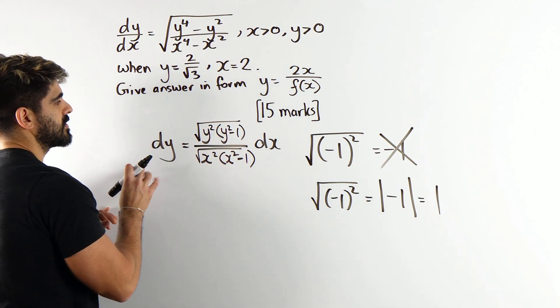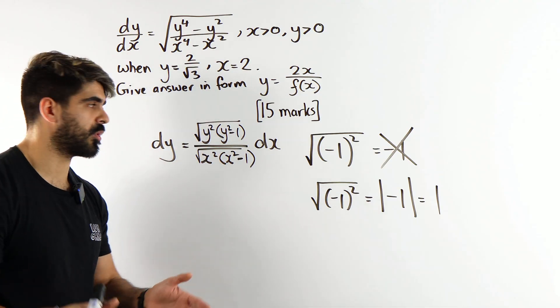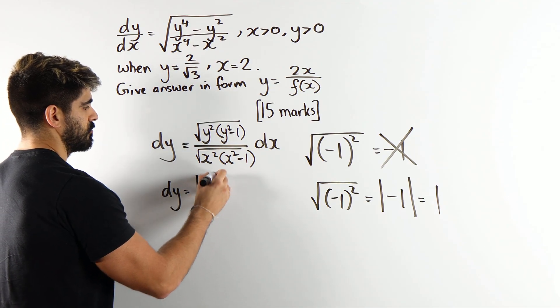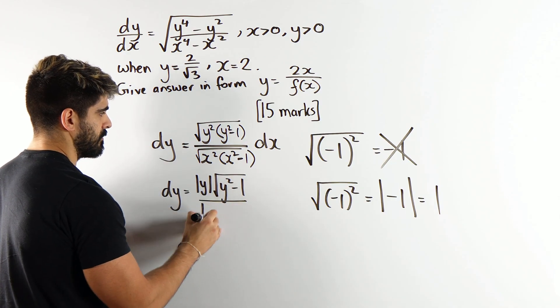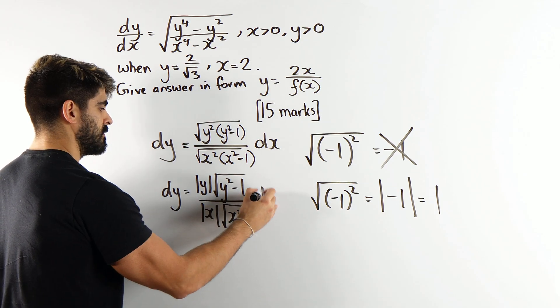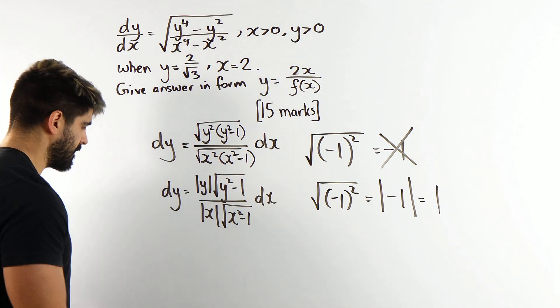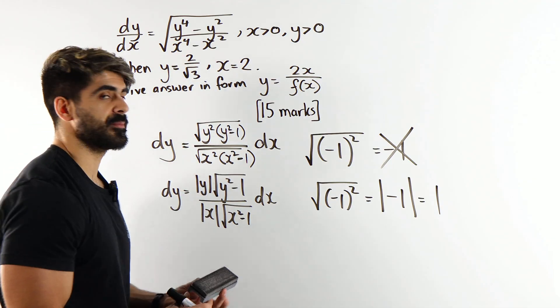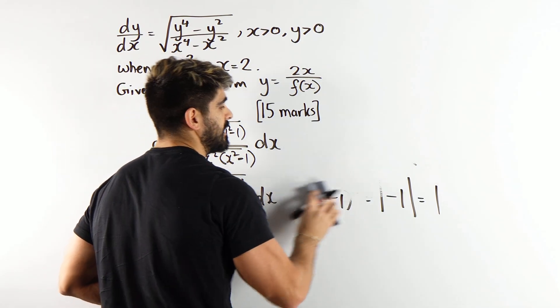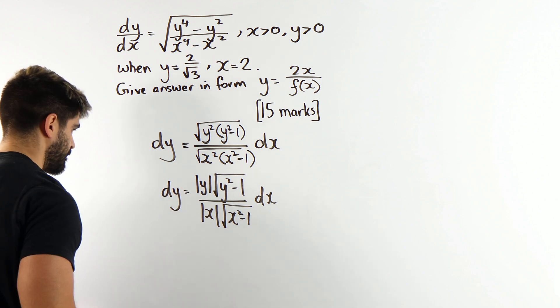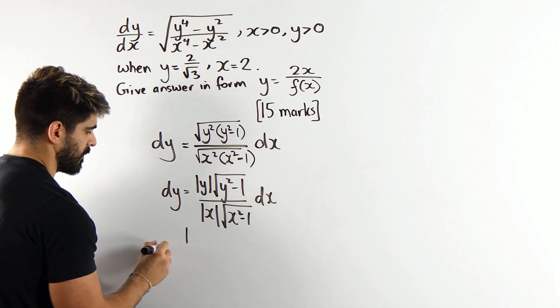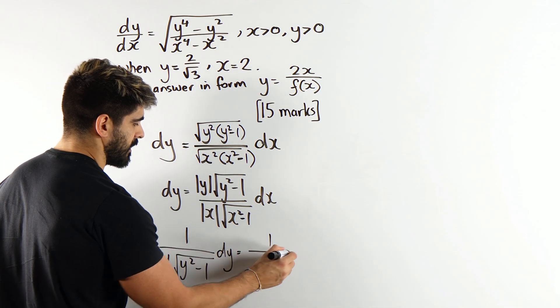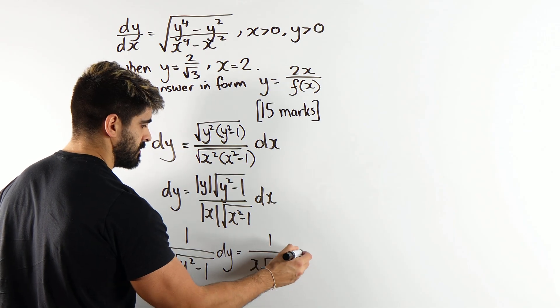To keep it simple, it's just to do BIDMAS. So, you're technically doing minus 1 squared first, and then you're rooting it. But, we're not going to get into the technicalities of that. Meaning, when I divide by this and apply the root, the y squared becomes modulus y. So, you're going to get the modulus of y, root of y squared minus 1, divided by the modulus of x, root x squared minus 1 dx.